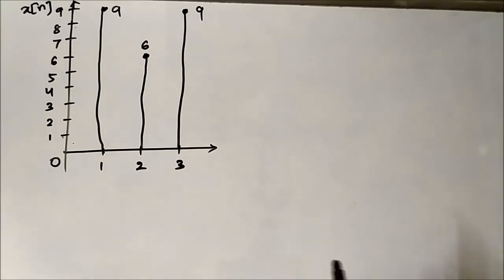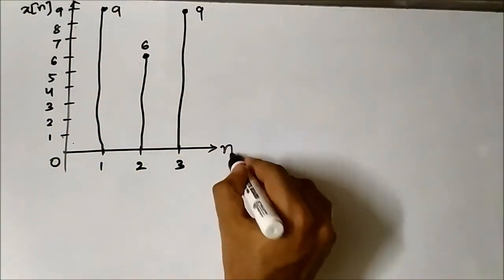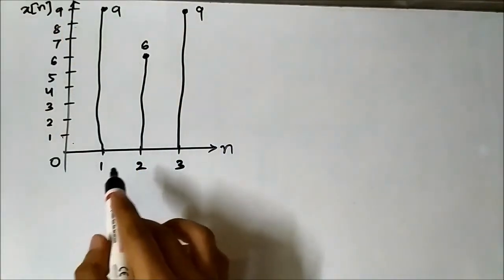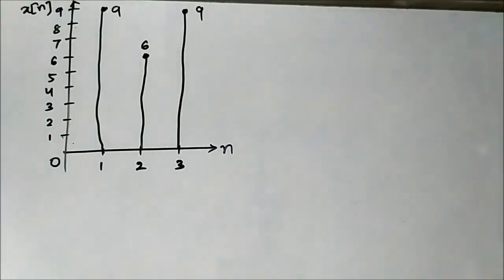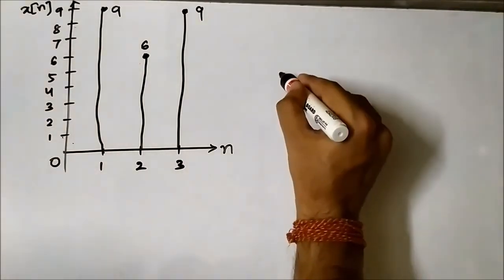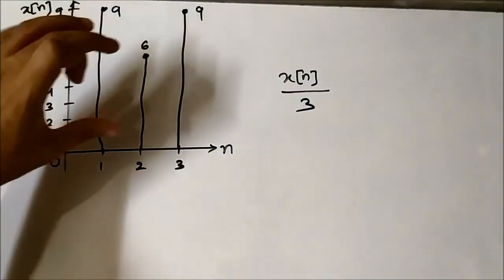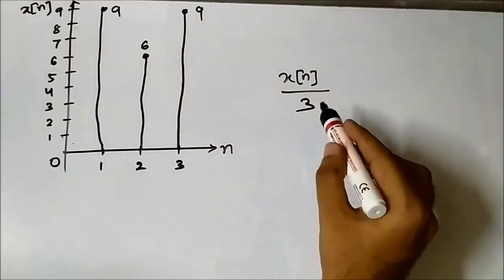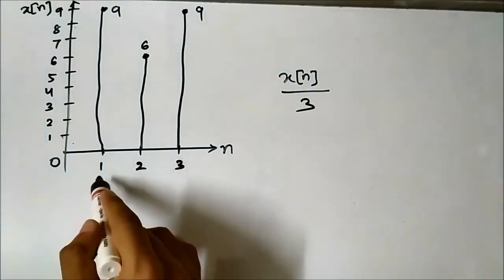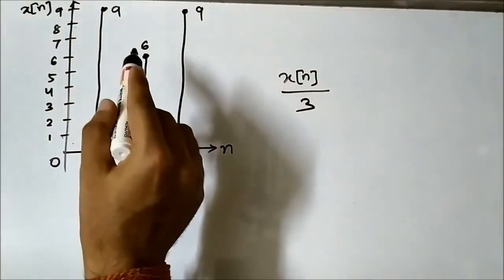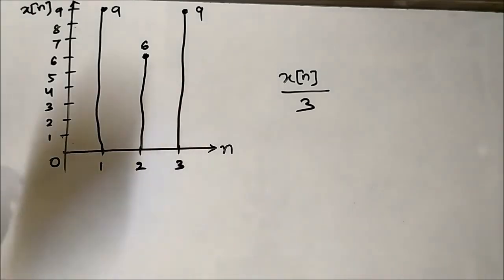This is the third question. We have a discrete time signal with amplitudes at the distinct points n=1, 2, 3 being 9, 6, and 9. We have to perform the scaling operation with scaling factor 1/3. At each of these points we multiply the amplitude by 1/3: 9×(1/3)=3, 6×(1/3)=2, and 9×(1/3)=3. So the amplitude scaled signal will have values 3, 2, 3.